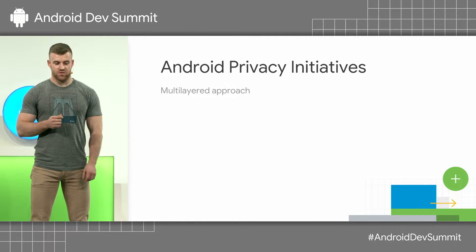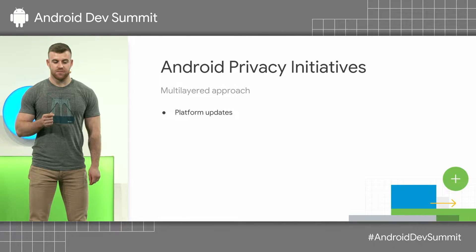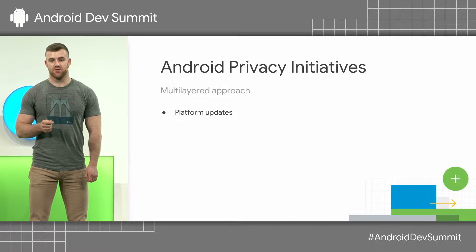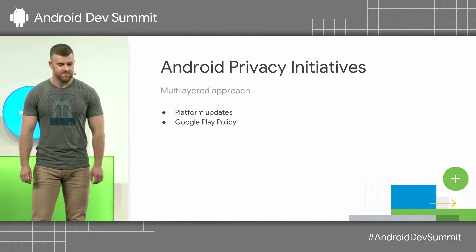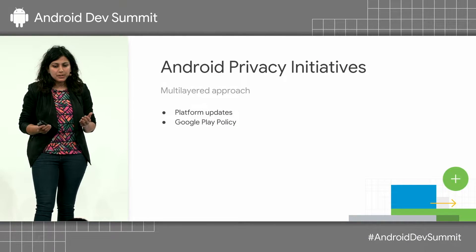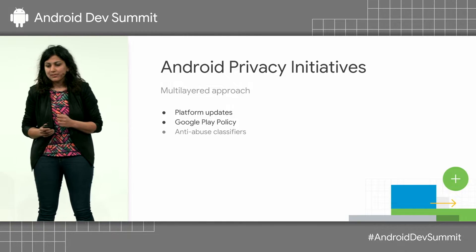We have a multi-layered approach to privacy in Android. Firstly, we focus on platform updates to improve the APIs that are used by apps to access personal information. We then set up our Play policies for keeping abuse in check and also ensuring that a level playing field is provided to developers and a safe experience for our users.